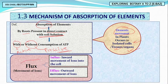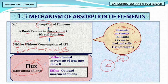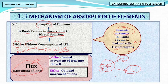The movement of ions is called flux. If ions move inward into the cell, it is called influx. If ions move outward out of the cell, it is called efflux. So we have two important types of movement: influx (inward) and efflux (outward).